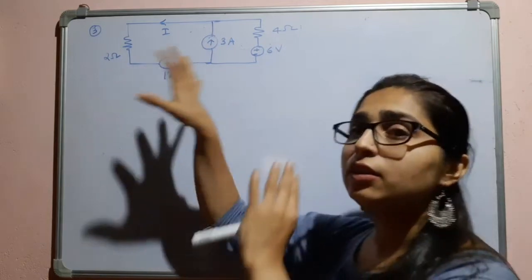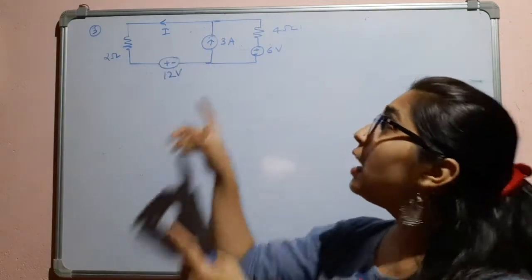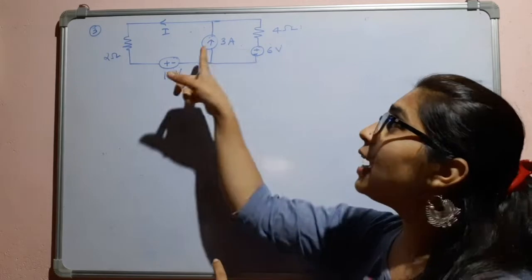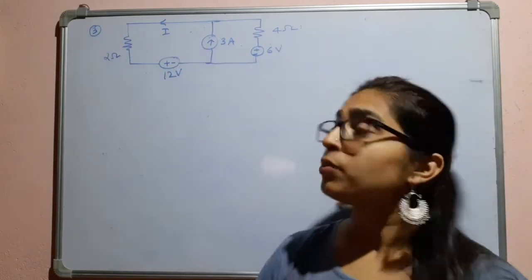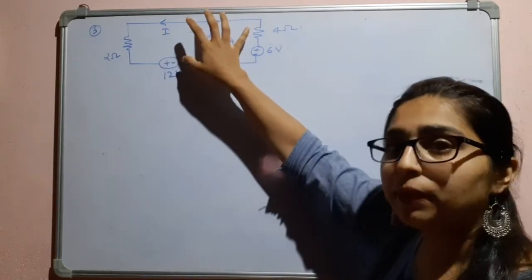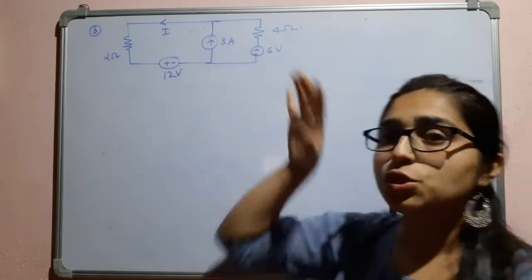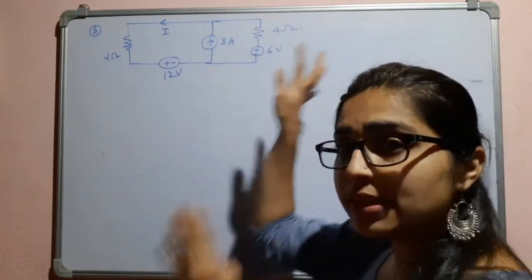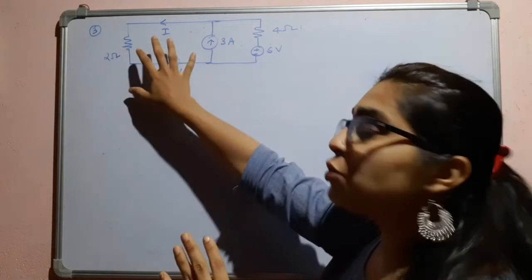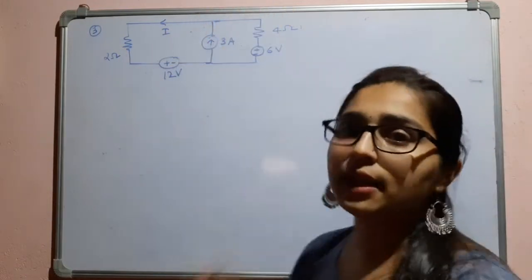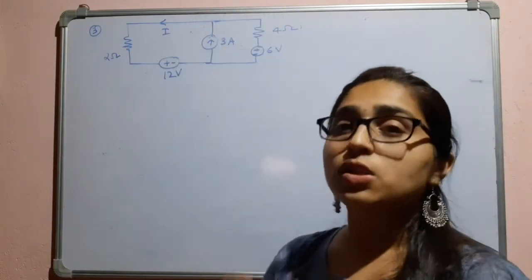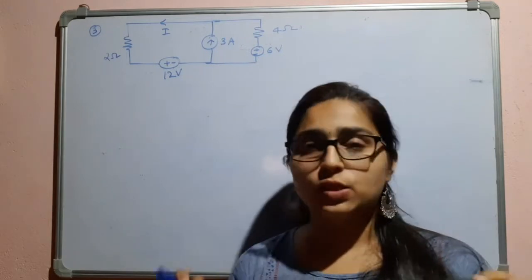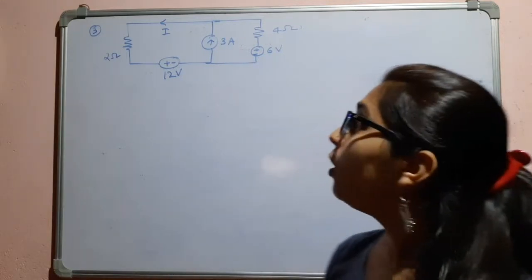If I consider the 12 volt voltage source, I have to short circuit the 6 volt voltage source and the 3 ampere current source. If I am considering the 3 ampere source, both voltage sources should be shorted. If I am considering only the 6 volt source, I have to short the other voltage source and open the current source. Always remember: the current source will be opened and the voltage source will be shorted.